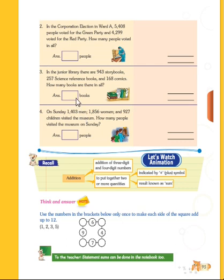In the third question: in the junior library there are 943 storybooks, 257 science reference books, and 168 comic books. How many books are there in all? Here also we have to add all three types of books. Then only we will get the answer.